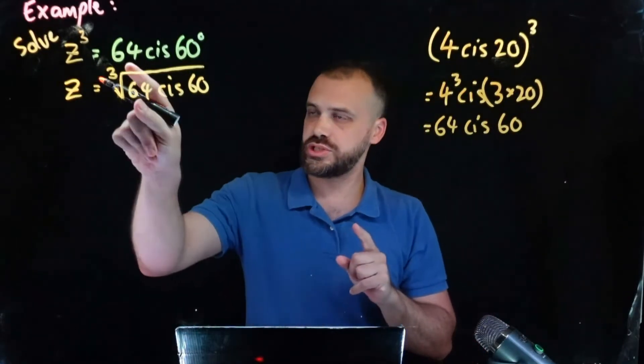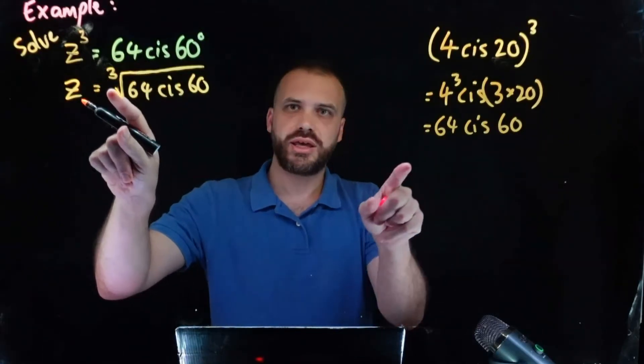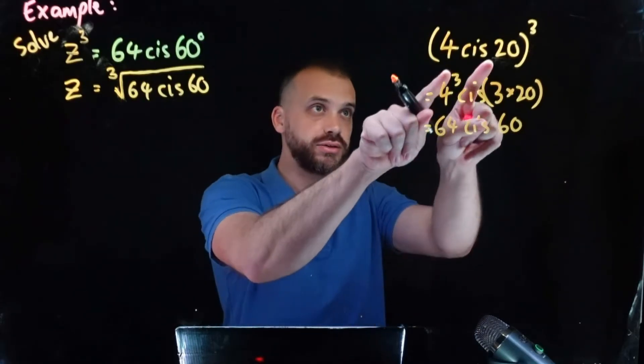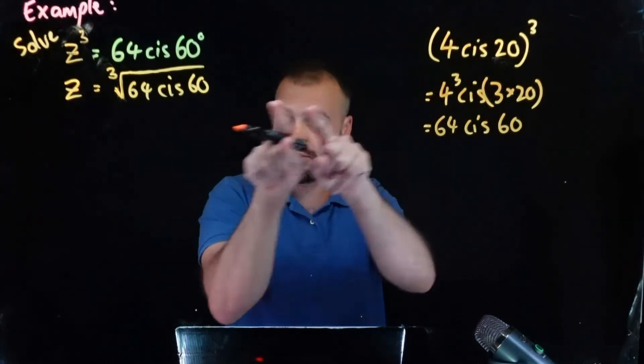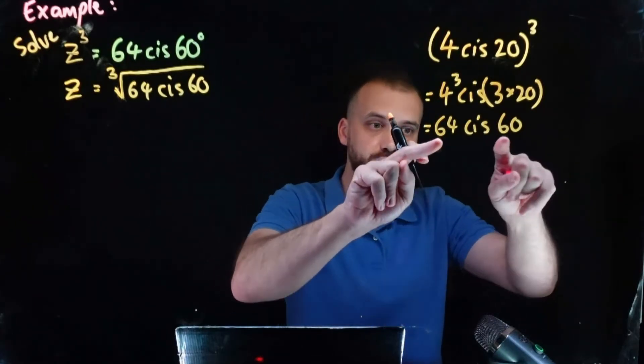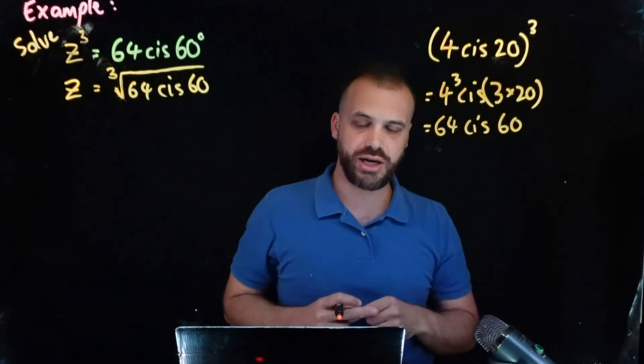If we find the cube root of 64 cis 60 we will get four cis 20. That makes sense - we raise that to the power of three we got that. If we cube root that we should go back to where we started.